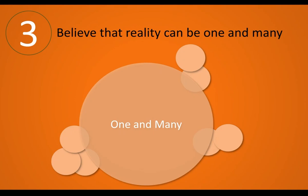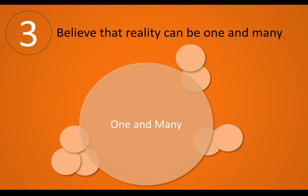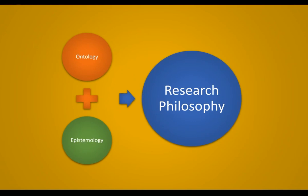The third belief is that there are one or maybe many realities — both possibilities exist. So keep in mind these three ontological concepts: first, there is only one reality; second, there are multiple realities and it is not independent of the perceiver; and third, there is one or maybe many realities. Now let's move to the second concept that we should understand very clearly: epistemology.